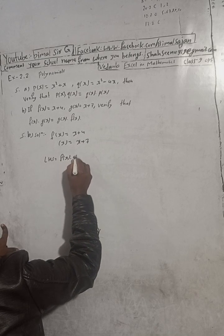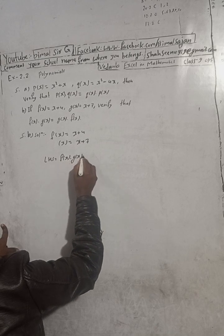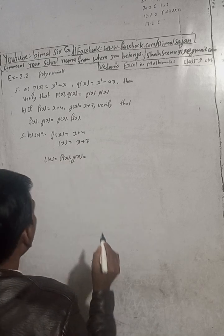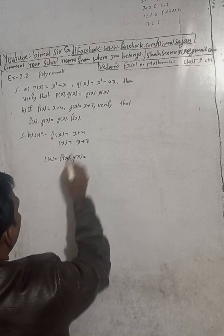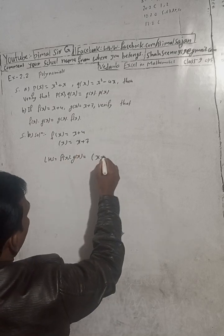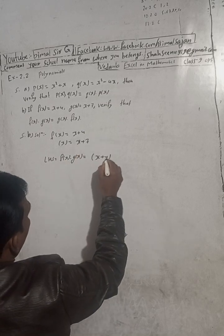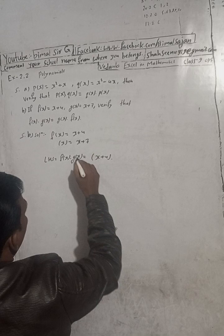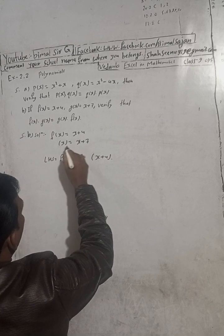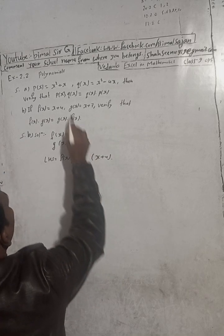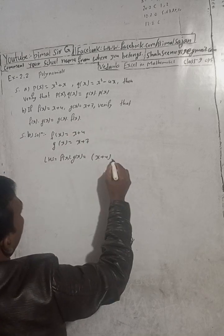LHS is f(x) into g(x), which is (x + 4) into (x + 7).